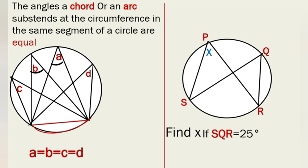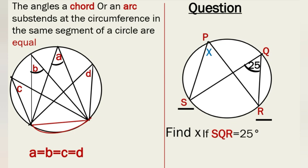Now let's go through a quick question illustrating the rule. The question says find X if angle SQR is 25 degrees. So SQR is 25 degrees — that is, at angle Q we put 25 degrees. Looking at the question, you realize that SQR and RPS arise from the same arc, that is arc SR. Following our rule, we can say angle SQR equals angle RPS, so 25 degrees equals X. Our X becomes 25 degrees.